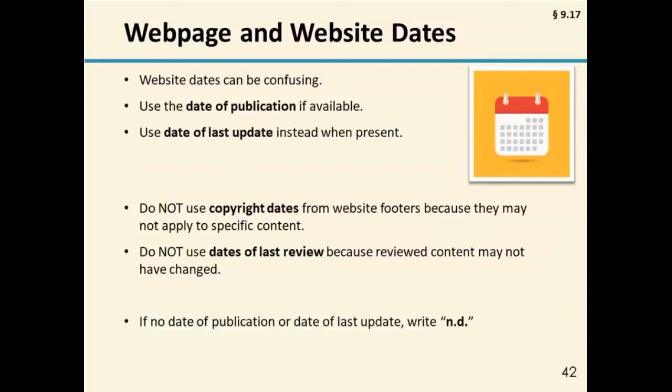Another problem you may run into has to do with web page and website dates. Identifying dates on web pages can be confusing because there's the potential of having too many dates. You may think that the copyright date in the footer of the web page is the date to use, but you want to make sure that copyright date actually applies to the content you are citing, not just to the whole web page when it was created. Better dates to use are the date of last publication for the web page when available, or the date of last update. Do not use the copyright date from a web page footer, and don't use the date of last review because that doesn't mean anything was actually changed. If there is no separate date of publication, treat the work as having no date and write n.d.